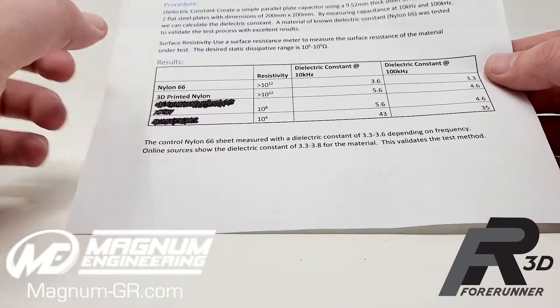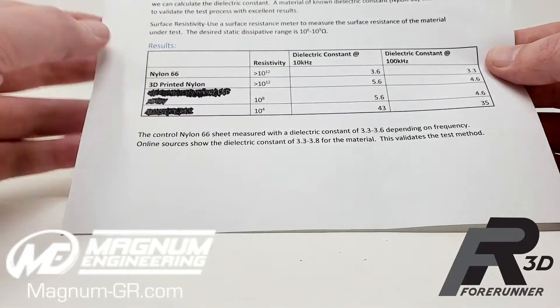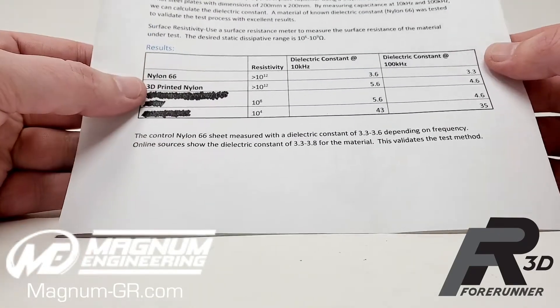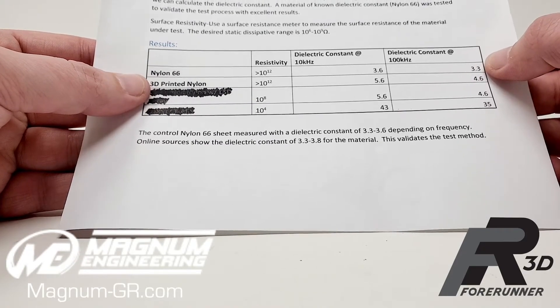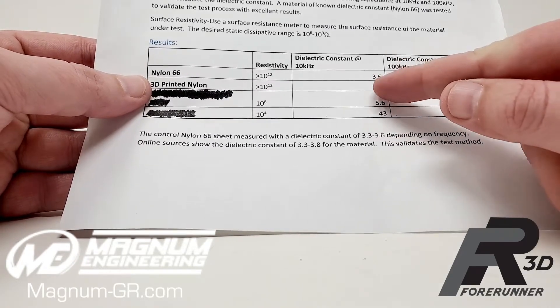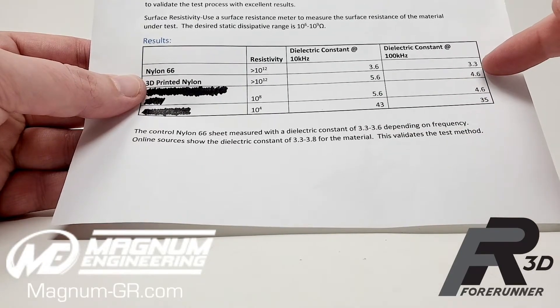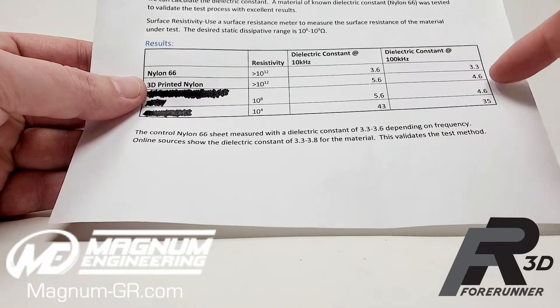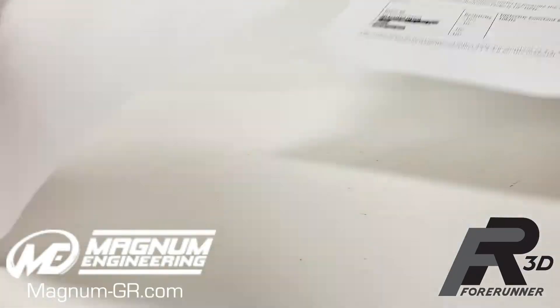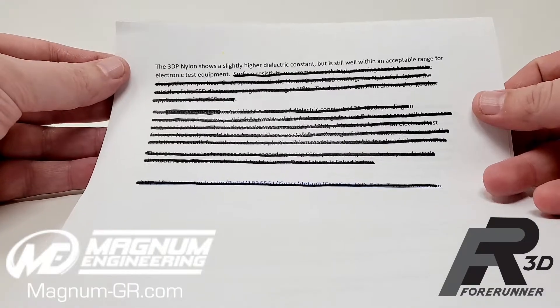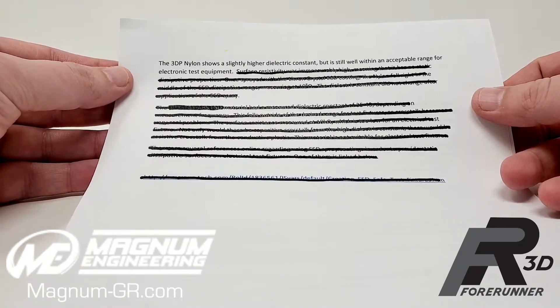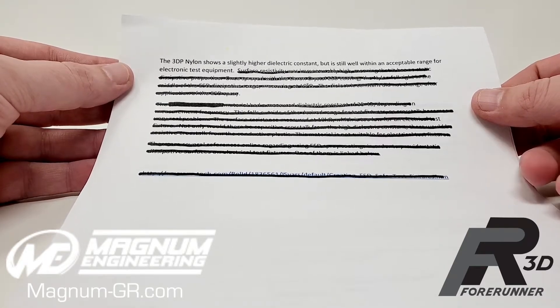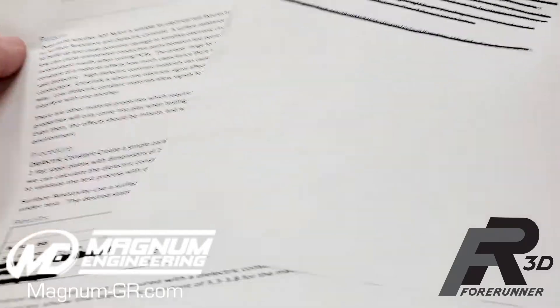Then I gave them some parts out of 3D printed nylon and they tested them at 10 kilohertz and 100 kilohertz, basically looking for that crosstalk phenomenon. What they found is the dielectric constant of the nylon 6-6 is 3.6 and 3.3, and for the 3D printed nylon it is 5.6 and 4.6. Their feedback on all of that is the 3D printed nylon shows a slightly higher dielectric constant but is still well within an acceptable range for electronic test equipment.